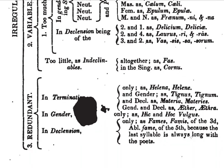Then we have those that are redundant: in termination only, as in helena and helene; in gender, as in tignus and tignum; and in declension, as in materia and materies; and both, as in aiter and aitra. Or those redundant in gender, as in hic vulgus and hoc vulgus. And those redundant in declension only, as in fames, famis of the third, and ablative fame of the fifth — because the last syllable is always long with the poets.